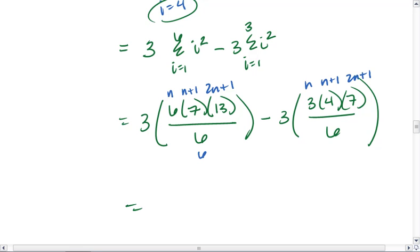I can go through the math. Over here, my 6s cancel. Here, 6 and 3 can reduce. And then 2 and 4 can reduce. Leaving me with 3 times 7 times 13. I get 273 minus 3 times 2 times 7. Gives me 42. So my final answer is that my sum equals 273 minus 42, which is 231.